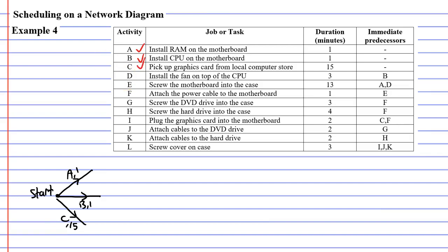Moving on to Activity D — we're installing the fan on top of the CPU, and that has to happen after Activity B. We have to install the CPU before we install the fan. So we complete Activity B and then carry on with Activity D, which has a duration of 3 minutes. So we write D, 3.